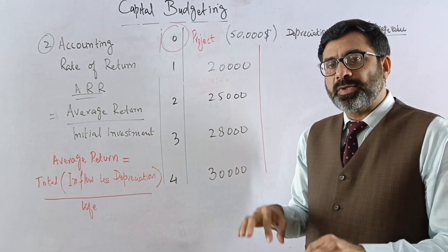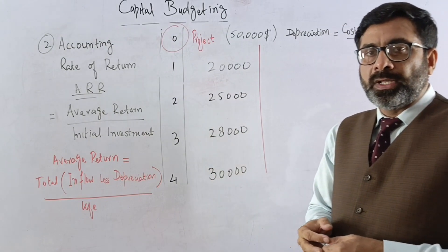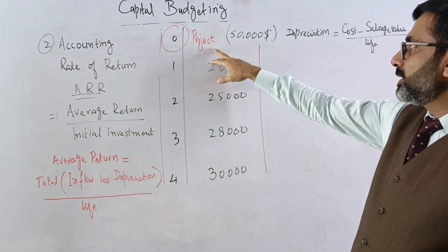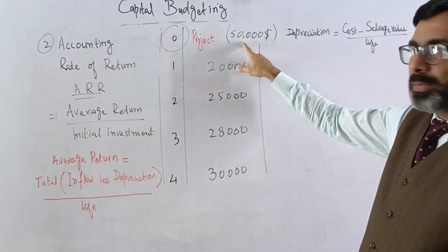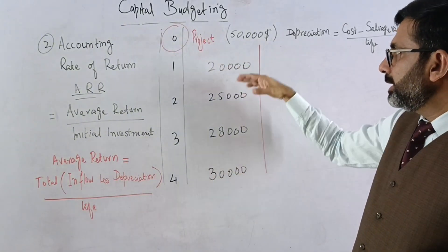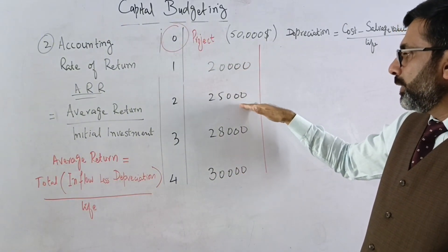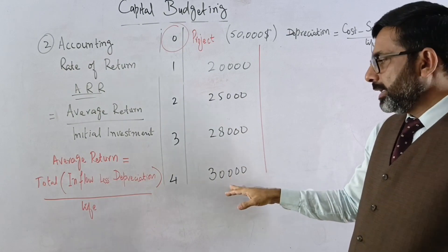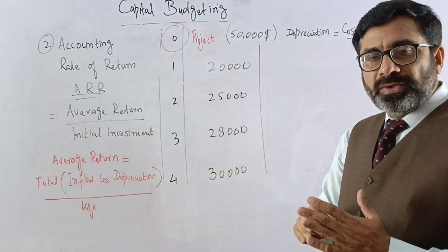As a simple example, we have a project with an initial investment of 50,000, a life of four years, and inflows of 20,000, 25,000, 28,000, and 30,000 over the next four years.